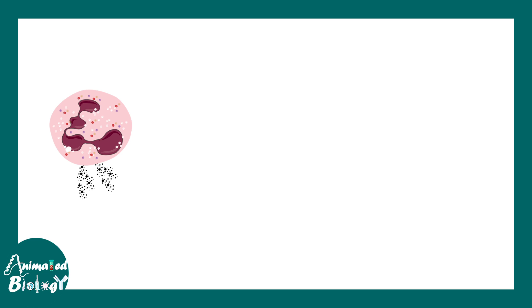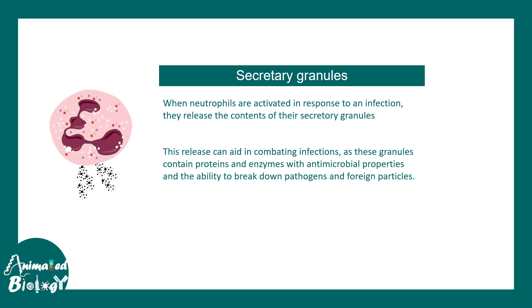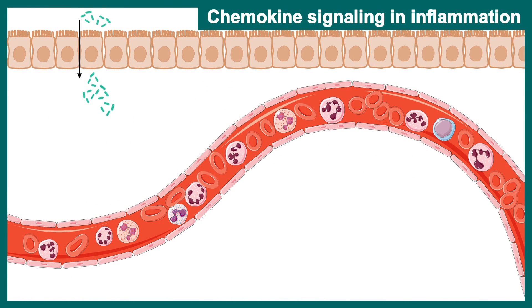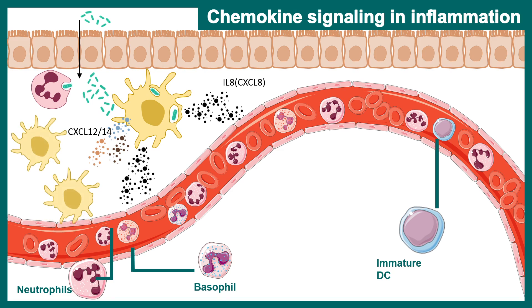Another broadly defined category, still debatable, is the secretory granules. These are secreted by activated neutrophils in response to an infection. Most of the components in secretory granules are chemokines and cytokines — they act as backup signals telling other innate immune components to provide reinforcement. For example, during a bacterial invasion, macrophages secrete components like CXCL8 and neutrophils secrete components like CXCL12 or CXCL14, all of which help recruit more macrophages and neutrophils to the site of infection.